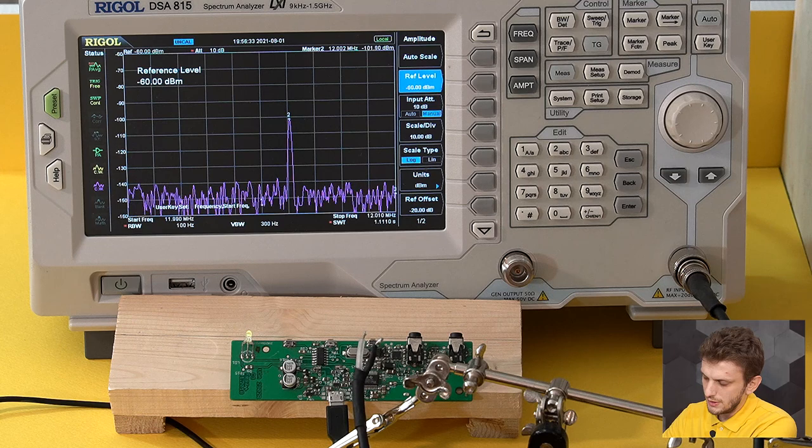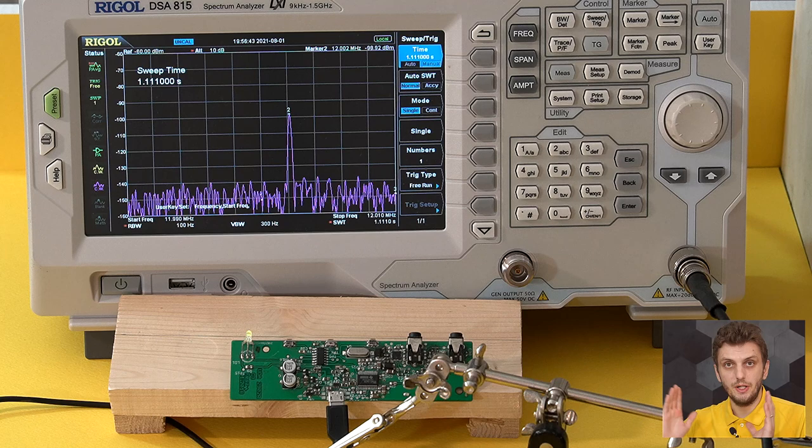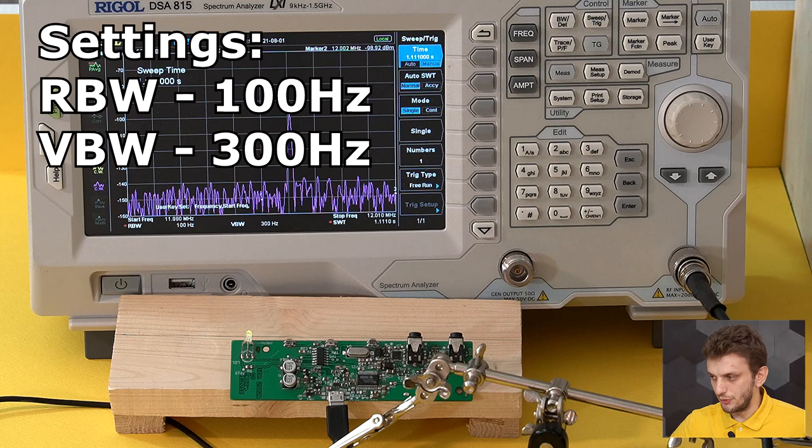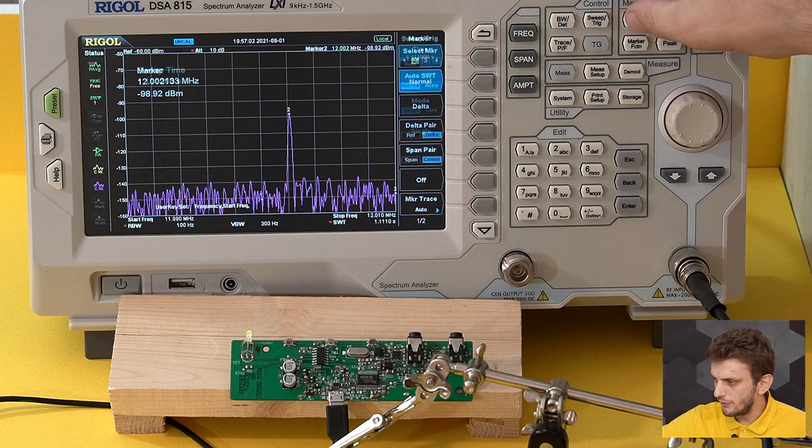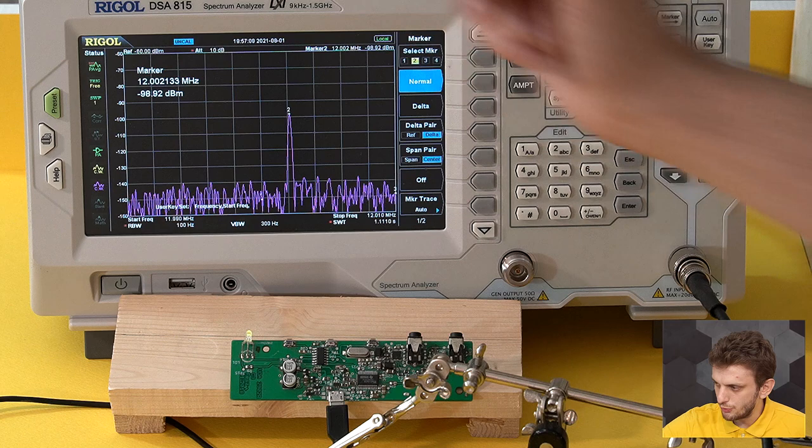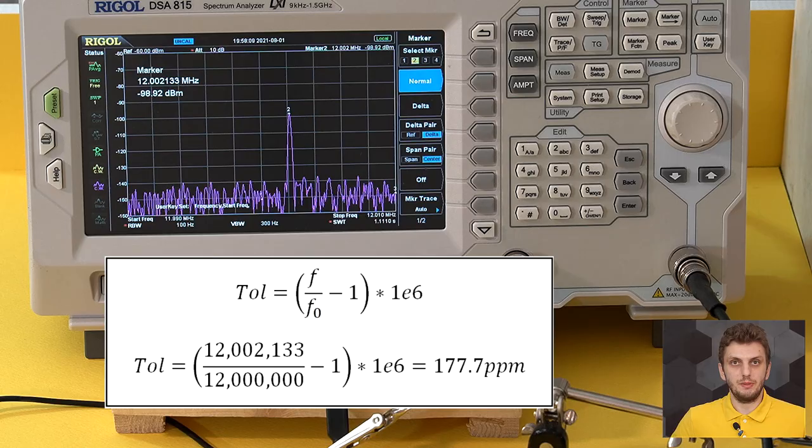It's important to mention that my measurement is running on a very small frequency span—between 11.99 megahertz and 12.01 megahertz—and my measurement bandwidth is set to only 300 hertz. You will need this sort of settings to get very clear measurements. If I use my marker function, I can see my spike is appearing at 12.0021 megahertz, and we can work out that this value is equivalent to 178 parts per million deviation from the expected 12 megahertz.